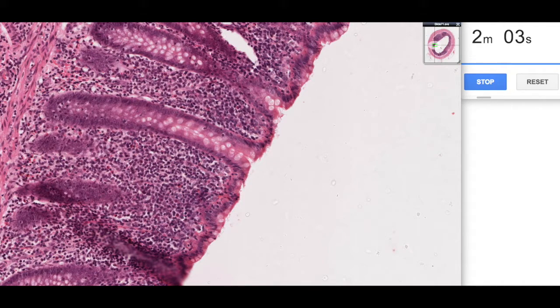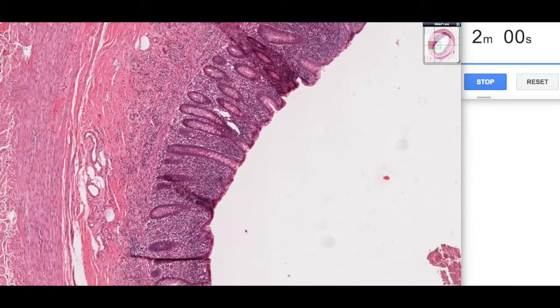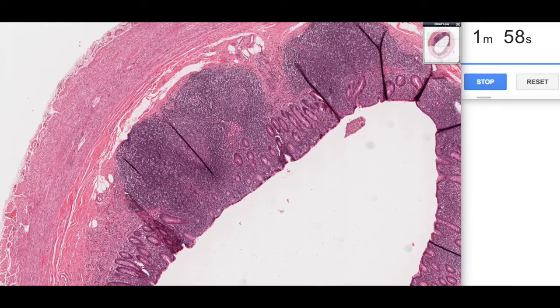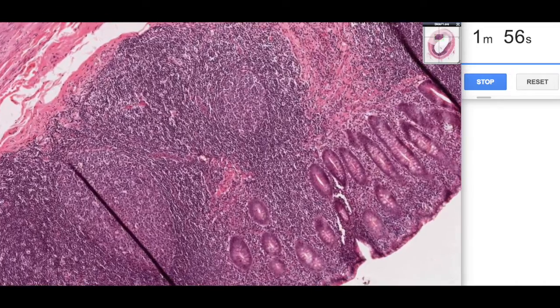Now all of these are lymphocytes. If we sort of zoom out a little bit, we can zoom around and see little features of these lymphoid follicles.